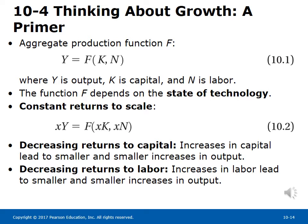Equation 10.2 states that if both capital and labor are increased by a factor X and output increases by the same factor, the economy experiences constant returns to scale. If only one input — say, capital — is increased, the same increase in capital will lead to smaller and smaller increases in output as the level of capital increases. This property is called decreasing returns to capital. Similarly, increases in labor given capital lead to smaller and smaller increases in output, demonstrating decreasing returns to labor.